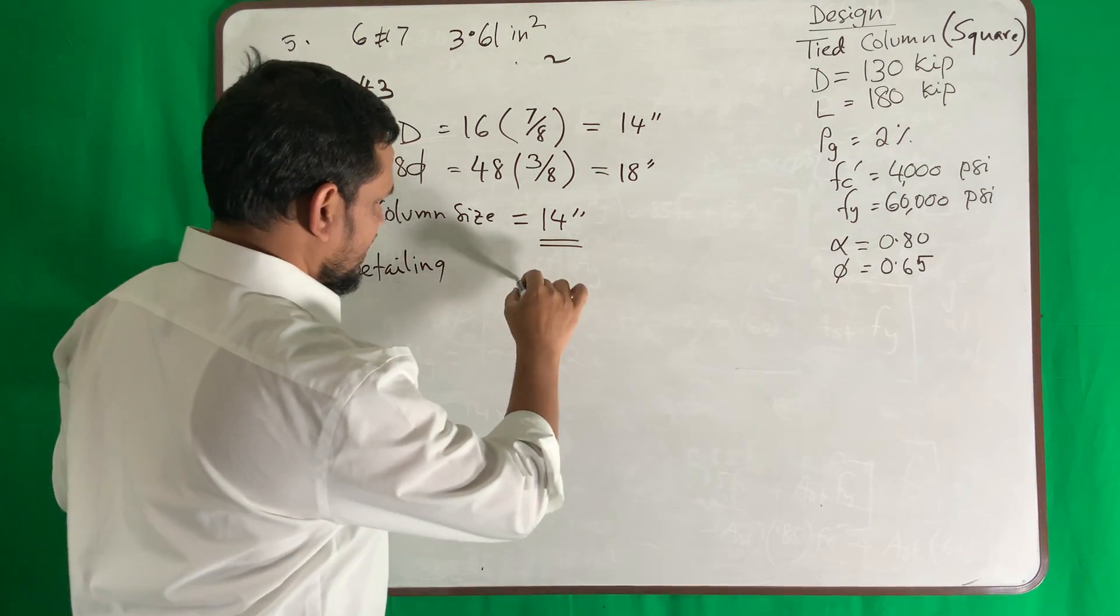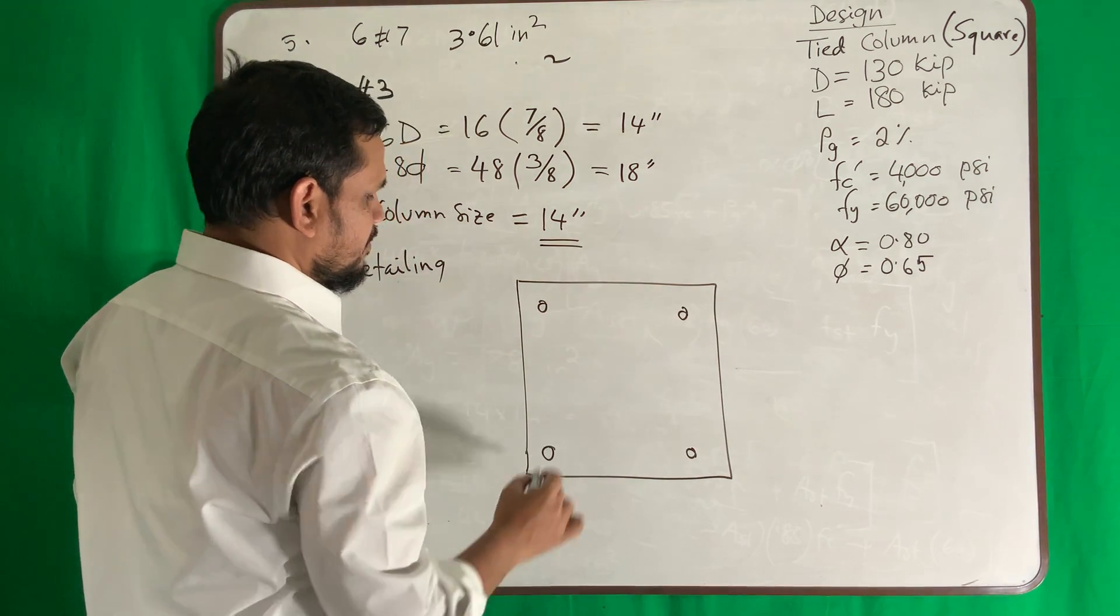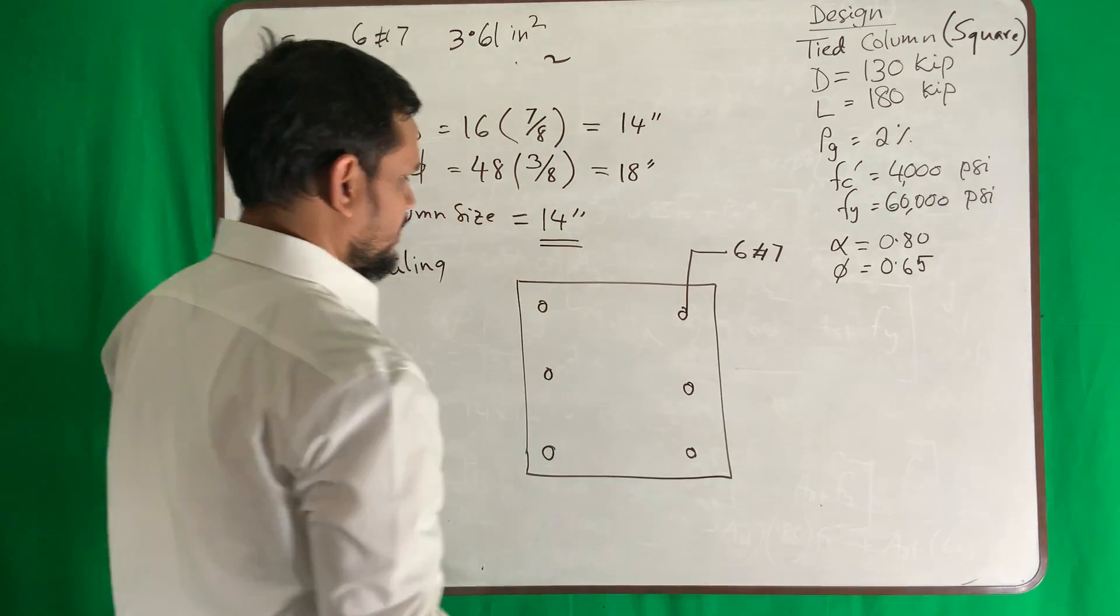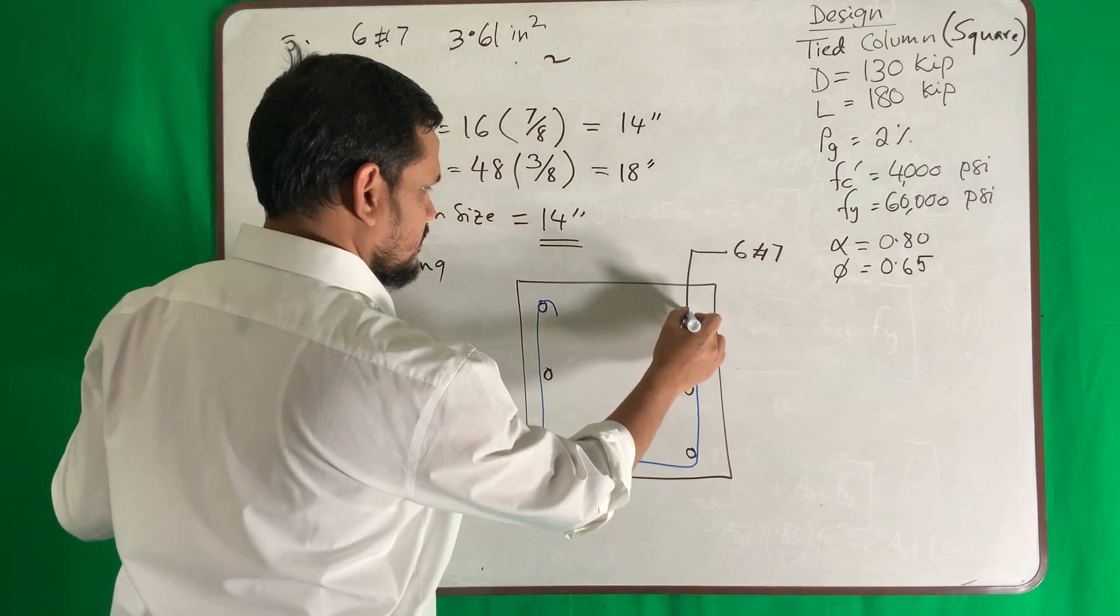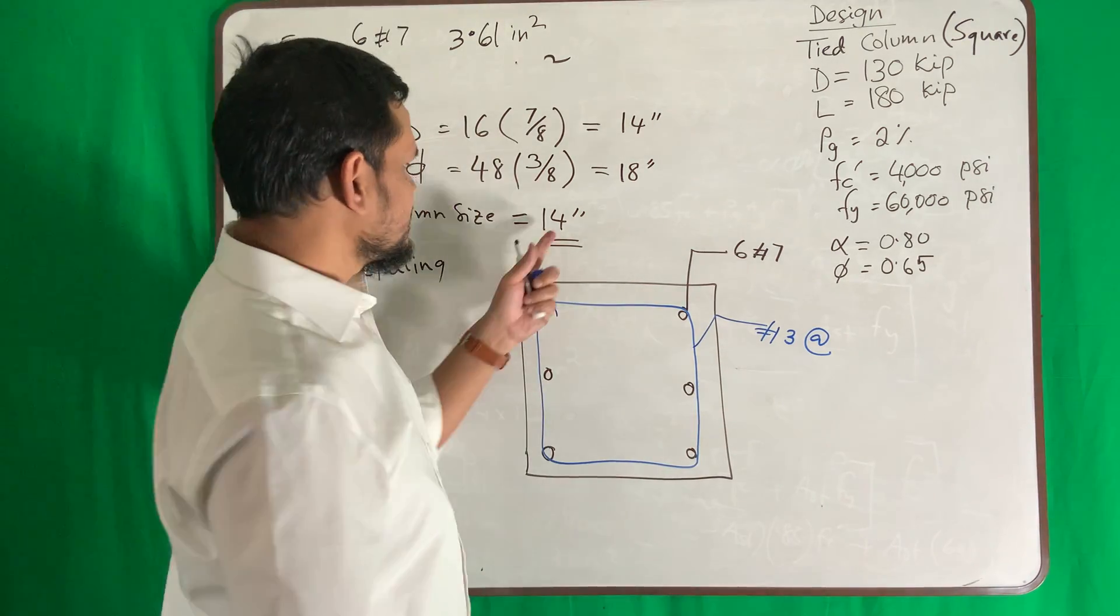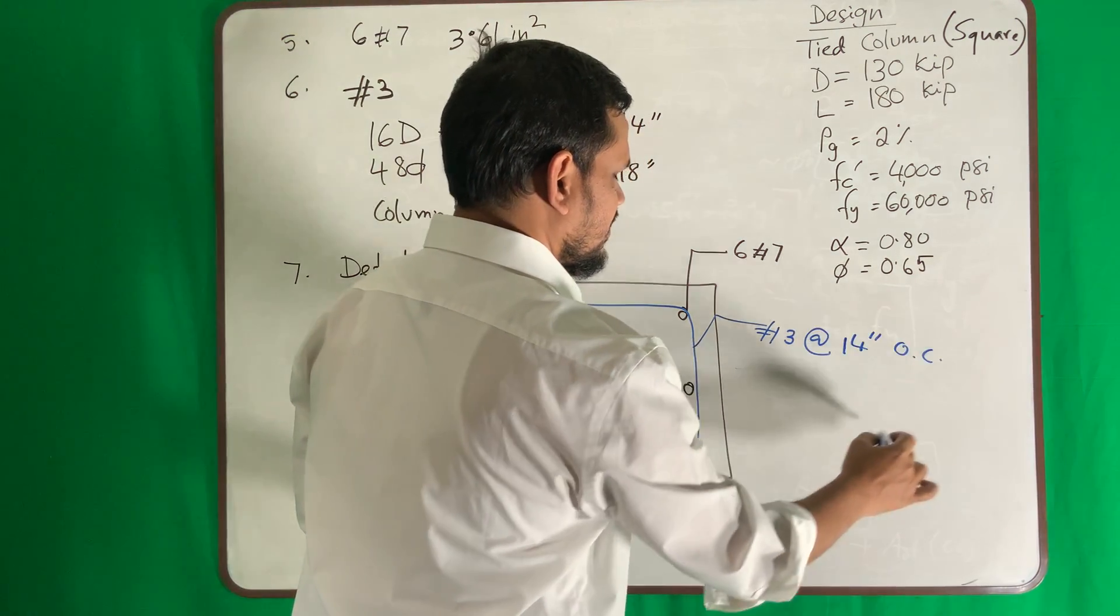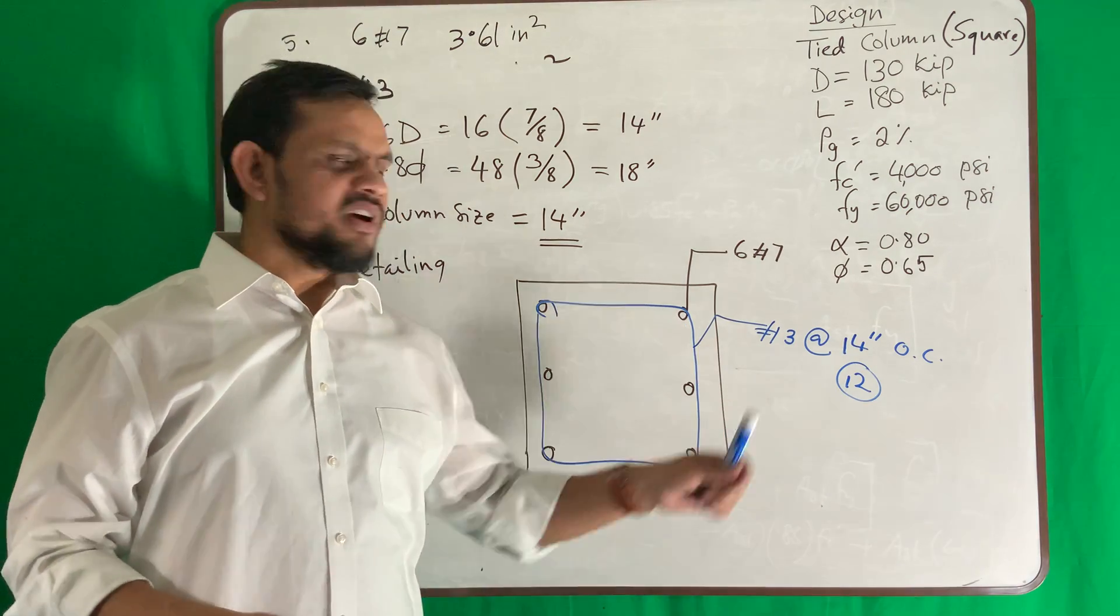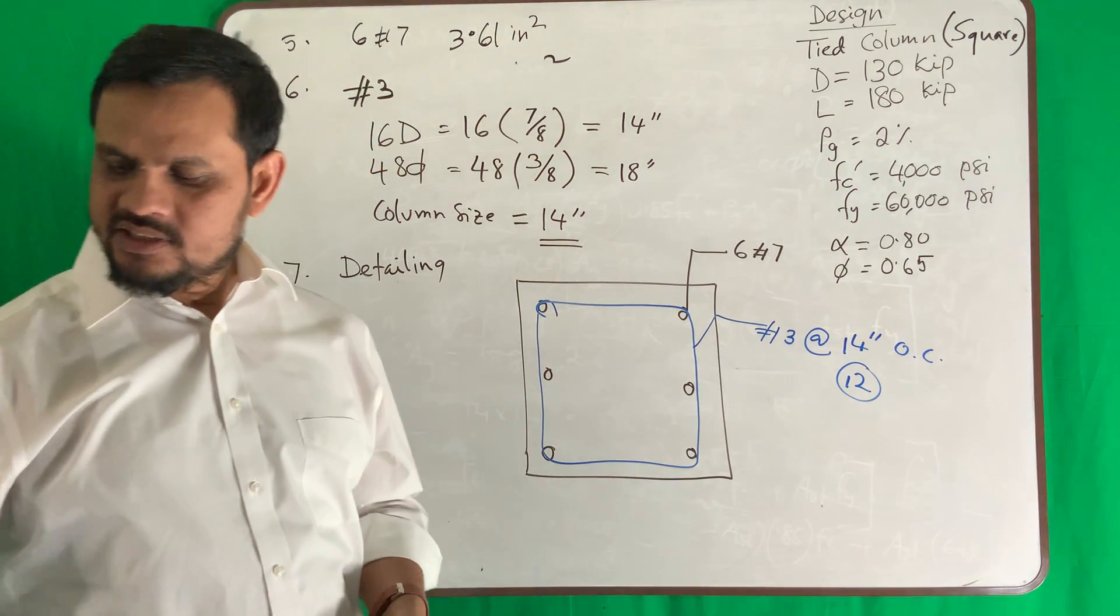Then step number 7, we will do detailing and check. So take a picture like this case: one reinforcement, two reinforcement, three, four, maybe five, six, yeah. How many? Six number 7. Then use a tie, tie is number 3 at the rate of 14 inch. Now 14 inch is a good number, you can use 14 inch center, you can also use 12 inch because 12 inch is a very popular number, one foot, very popular number. So you can use less, you cannot use more. If I am the design engineer I will use 12 to make a round number. Your field labor or field engineer, they will love it.